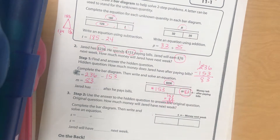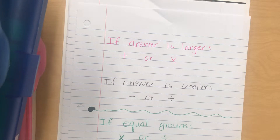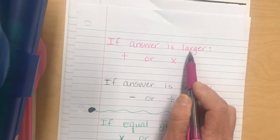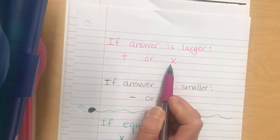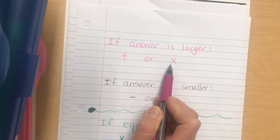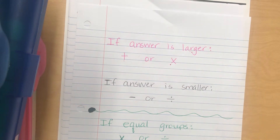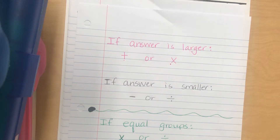He's going to earn 76 more. Is our answer going to be larger or smaller than those two numbers? It's going to be larger — he has 83 and he's going to earn 76 more, so we put those numbers together. It's going to be larger, so we're either adding or multiplying. Do I have 83 groups of 76? No — I have 83 and 76, which are not equal groups, so I'm going to add.